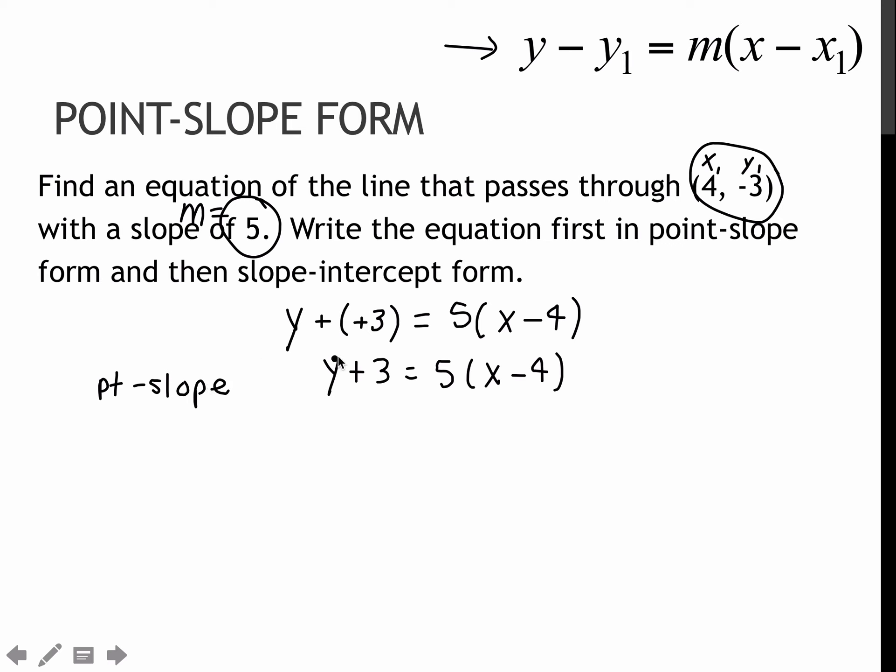Typically, we are asked to turn this into slope-intercept form. So I would then distribute on the right side. The left side remains unchanged. 5 times x is 5x. 5 times minus 4 is minus 20. And we're still not quite where we want to be, because we were trying to turn it into slope-intercept form, which is y equals mx plus b, where the y is by itself. So now I'm going to subtract 3 from each side, and get y equals 5x minus 23. This would be my final answer in slope-intercept form. In slope-intercept form, we could then graph this very easily by starting at negative 23 on the y-axis, and then using our slope of 5 to go up 5 and over 1. And that would give us two points to connect to create our line.